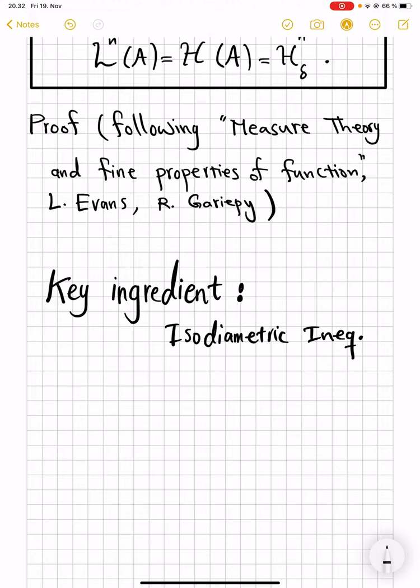If I write down this inequality right now, you will never remember that. Instead, if you are ever lost in a desert, and your life depends on remembering what isodiametric inequality is, follow this. Isodiametric means same diameter. Isodiametric inequality means of the sets that have the same diameter, the Euclidean ball has the biggest Lebesgue measure.